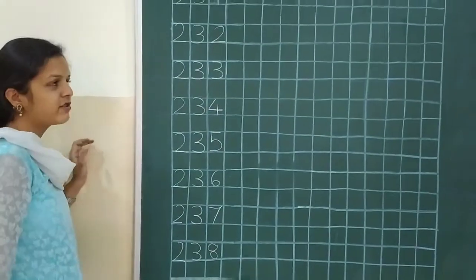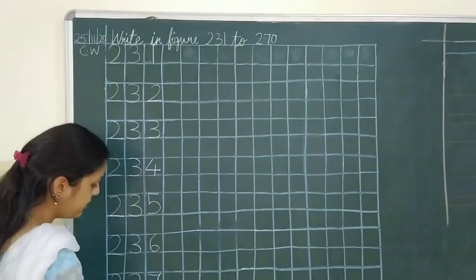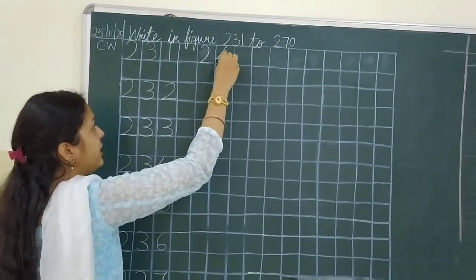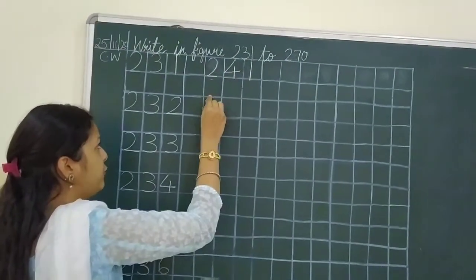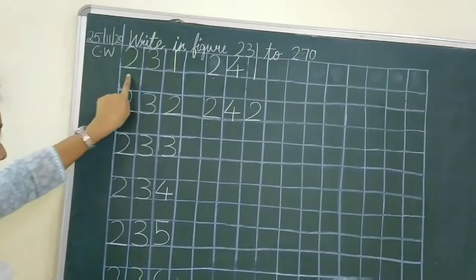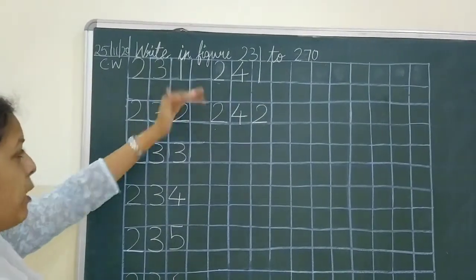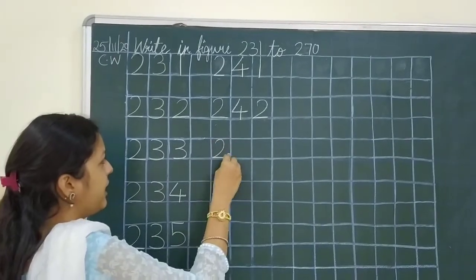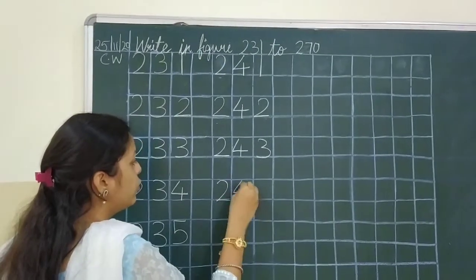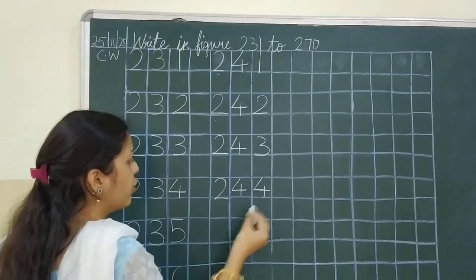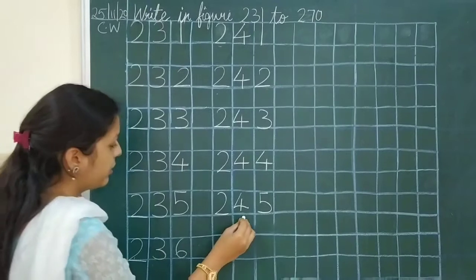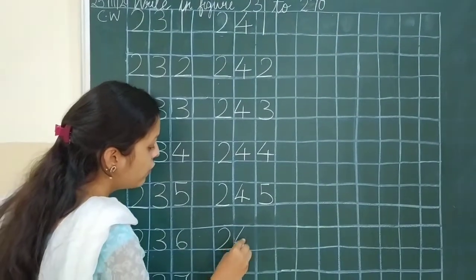Now this is the 200s range. 241. 242. And write in the line only, don't write up and down. 243. 244. 245.